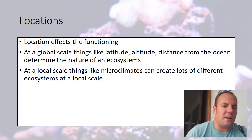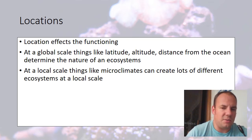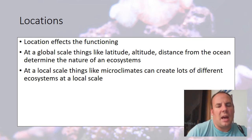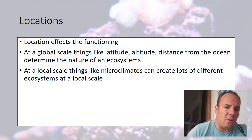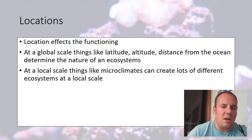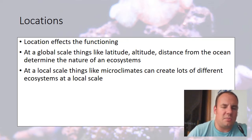Location affects the functioning of an ecosystem because at a global scale, things like latitude, altitude, and distance from the ocean determine the nature of an ecosystem. For example, on top of Mount Everest we wouldn't see as many plant or animal species as in a rainforest. Ecosystems function well when there's a good supply of temperature and precipitation. Too hot, and ecosystems don't really cope. Micro-climates at the local scale can also affect lots of different ecosystems.